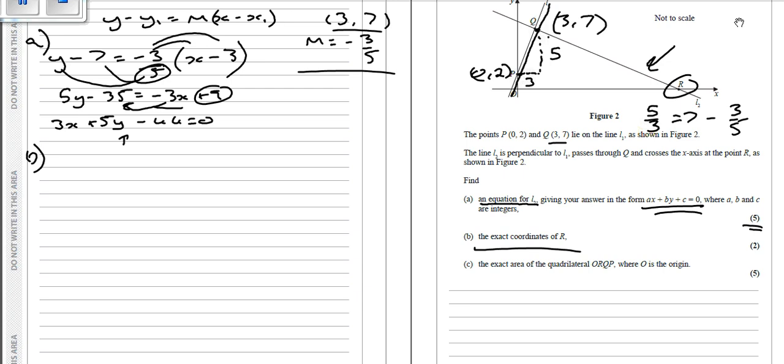So it's going to be 3x plus 5 lots of 0 minus 44 equals 0. So it's going to be 3x equals 44. So x equals 44 over 3. And that's the x-coordinate. We want the exact coordinates, so 44 over 3 across. And of course, 0 up.